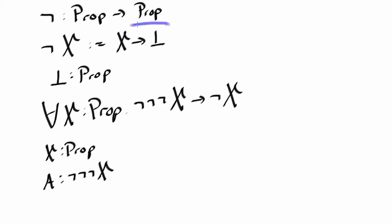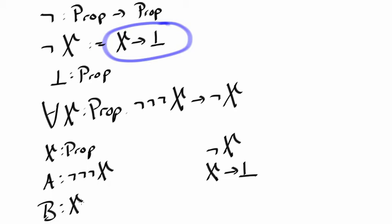But not X is the same as X implies false. So we're trying to prove not X, but that's the same as saying we're trying to prove X implies false, which means we can assume we have a proof of X.